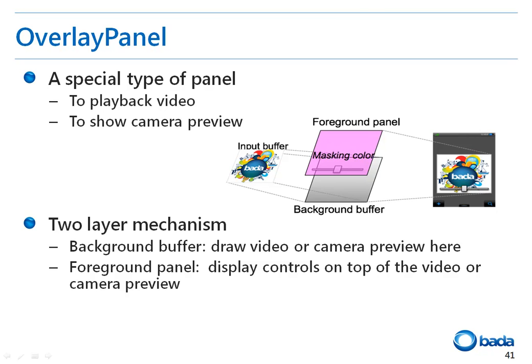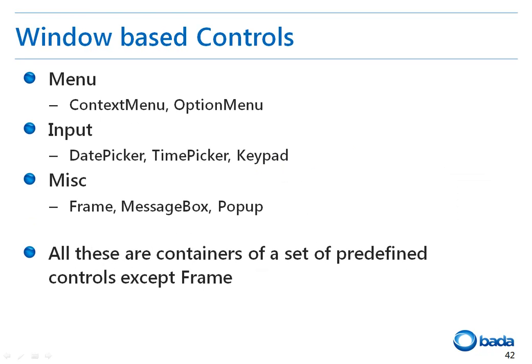This class consists of two components: the background buffer and the foreground panel. The video or camera preview is drawn in the background buffer. Other controls, such as a button or slide, are overlaid over the video or camera preview in the foreground panel.